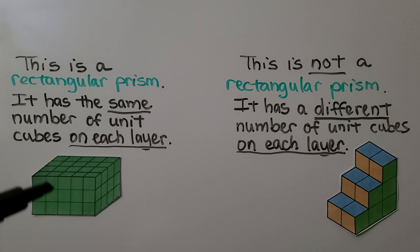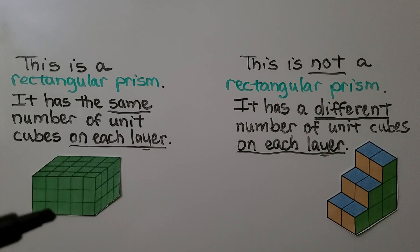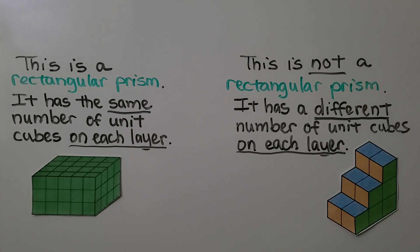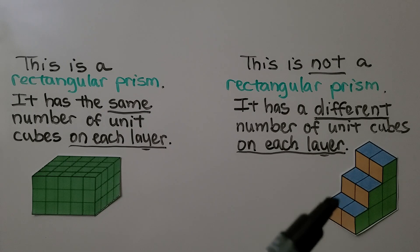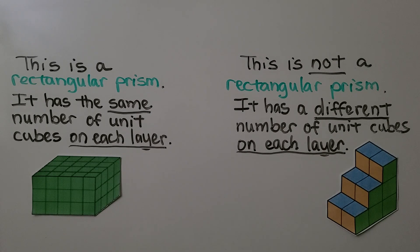This is a rectangular prism. It has the same number of unit cubes on each layer — there are none missing. We have the same number on each of the three layers. This is not a rectangular prism. It has a different number of unit cubes on each layer. Can you see the difference? There are none missing here, and here we've got a couple missing, and there's some missing here. That is not a rectangular prism.